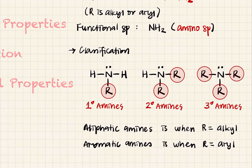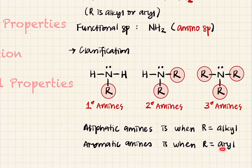The R groups can be alkyl — if it's an alkyl group it will be aliphatic amines. If you have an aryl group, like a benzene ring, you will have aromatic amines.